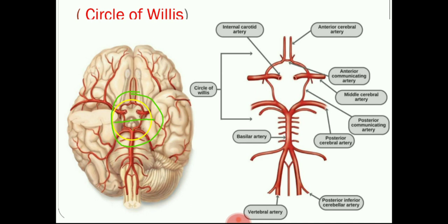Looking at some important branches: the anterior cerebral artery is the anterior continuation of the internal carotid artery; the posterior cerebral artery is a branch of the basilar artery; and the middle cerebral artery is another branch of the internal carotid artery. These different branches are found in various cisterns, which will be discussed further.